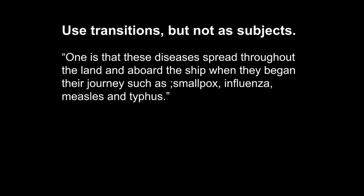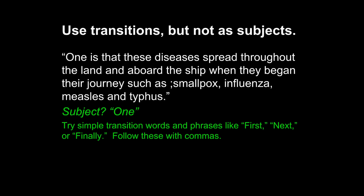This first sentence after the claim demonstrates a very simple principle: you want to use transition words, but not as subjects. When we talk about a subject, we're talking about the grammatical subject. With this sentence, the grammatical subject is 'one.' One is not clear at all — it indicates we're talking about the first effect or the first cause, which means it should be a transition word, but right now it's the subject. So get in the habit of using transition words and phrases, but don't use them as subjects. You can try simple transition words like 'first,' 'next,' or 'finally,' and you want to follow those with commas. If you do that — 'First,' comma — then your next word will probably be a strong subject, and your sentence will be much stronger and clearer.